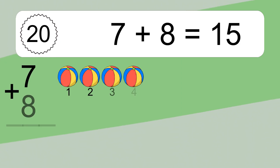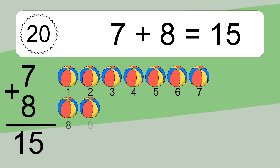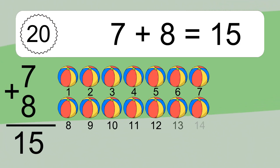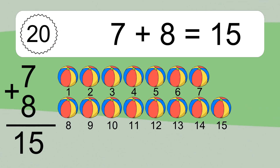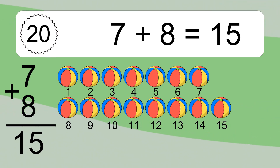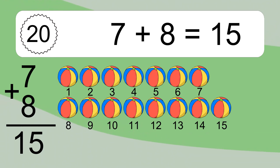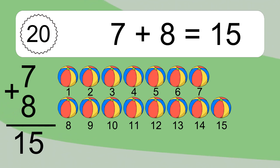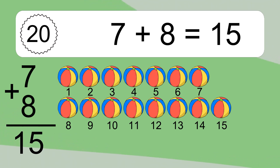7 plus 8 equals 15. Let's count it. 1, 2, 3, 4, 5, 6, 7, 8, 9, 10, 11, 12, 13, 14, 15.